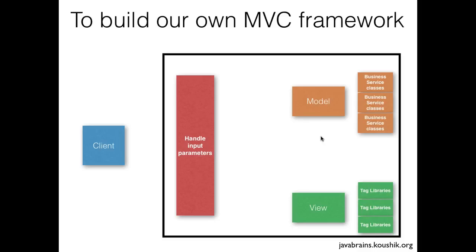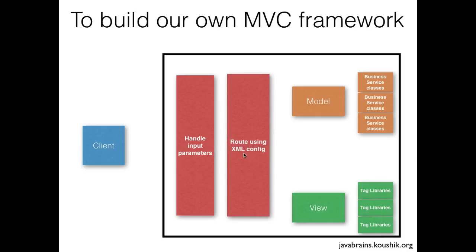Finally, you'd need something that orchestrates everything — calls the right model, redirects to the right view, and displays the output. This routing module would read from an XML configuration file and route depending on the request. If the client request is 'get user profile,' it calls the right model; if it's 'change password,' it calls the appropriate model and redirects to the right JSP. The XML would differ per application, but the routing module stays the same across all hundred applications.